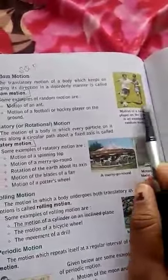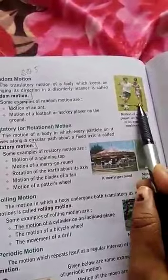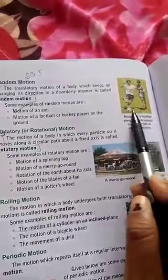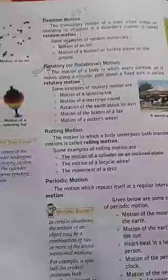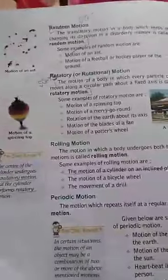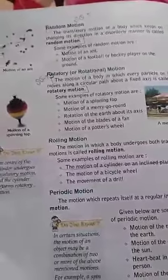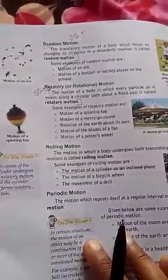Many examples exist, such as when a player is playing football on the ground. The football changes its direction again and again, so it is an example of random motion. Similarly, when a hockey player is playing, that is also random motion. These are all types of translatory motion: first was linear motion, second was...